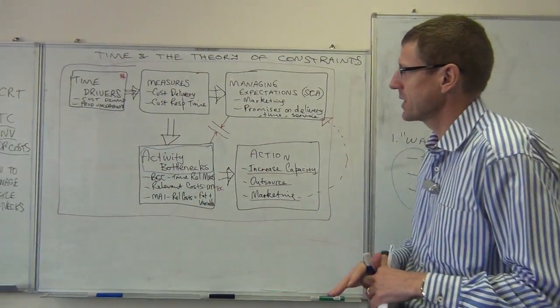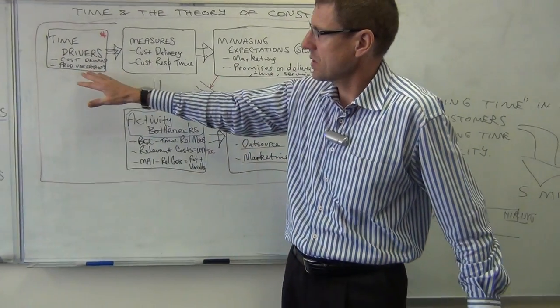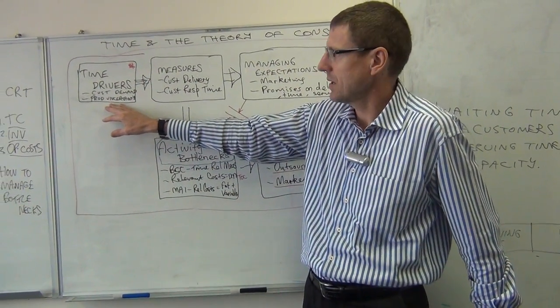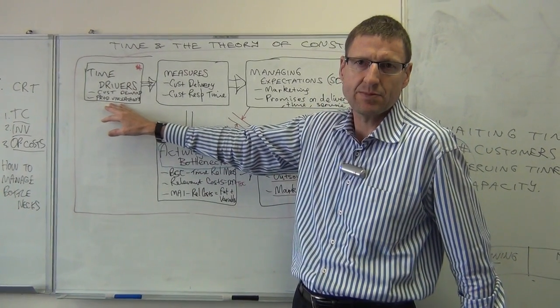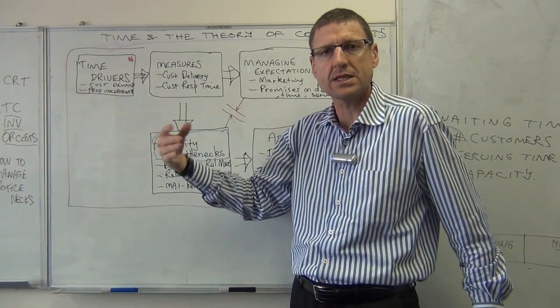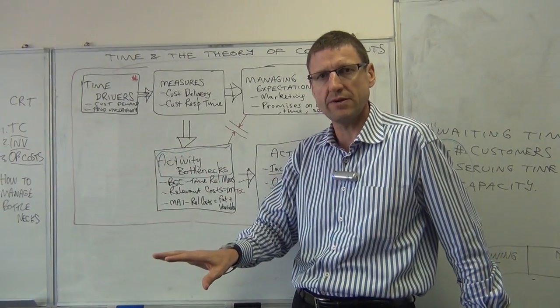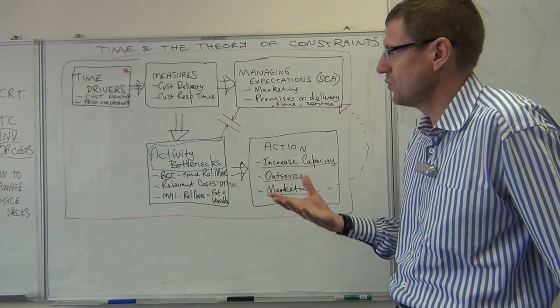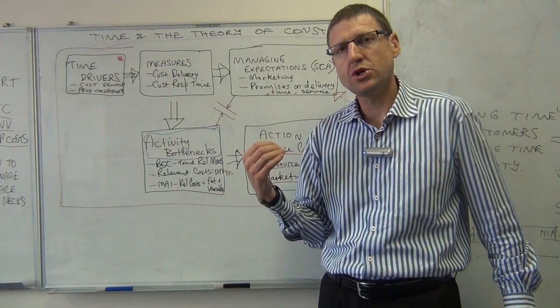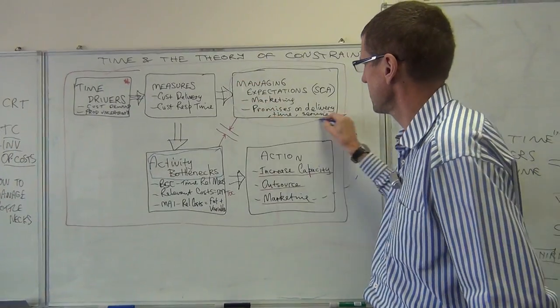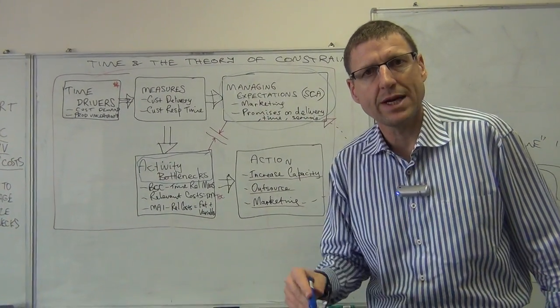So just getting back to the big framework. Look, all companies are competing on time in some way. All right, we can't change that. And it's because there's uncertainty in customer demand and also there's uncertainty in the supply chain or the production environment. How do you respond to that? There's two ways. We actually respond by managing expectations, upwards or downwards.